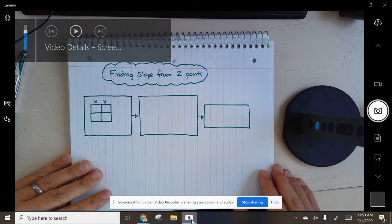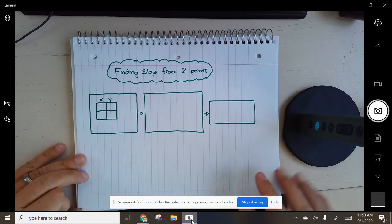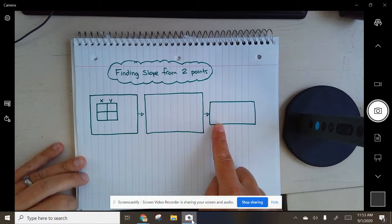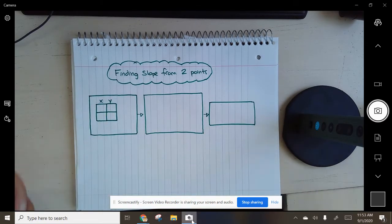Alright, so the title of your map is finding slope from two points and this is the actual way I want you to set this up. I'm gonna put some data in this right here so make sure you have this all set up for you.